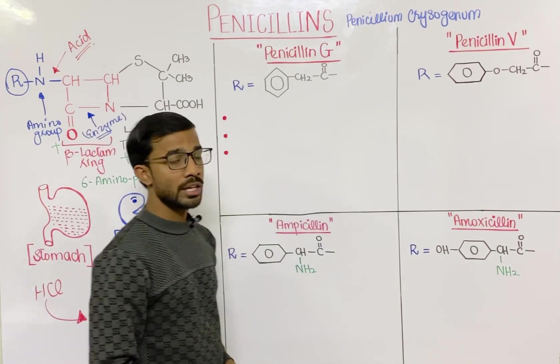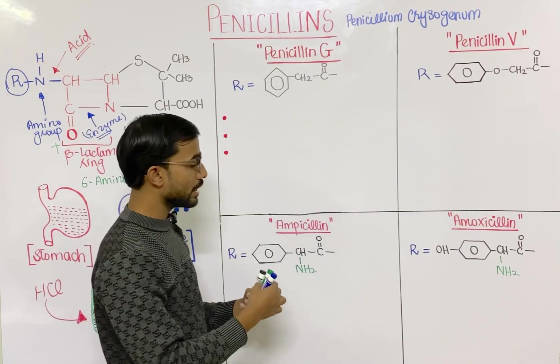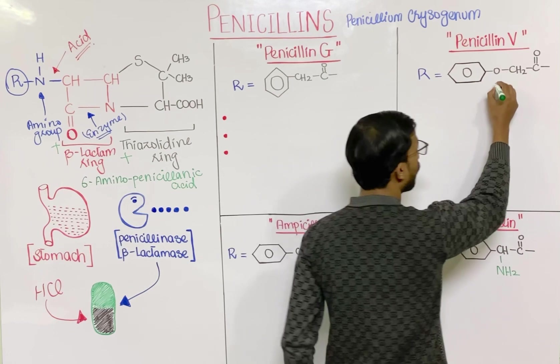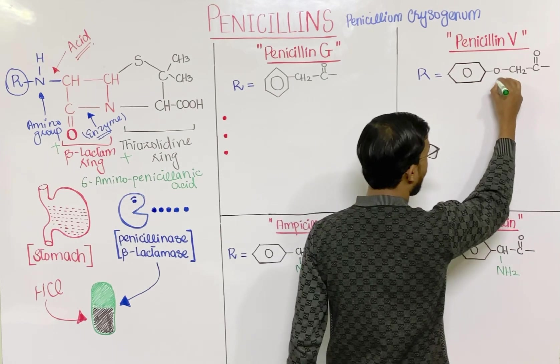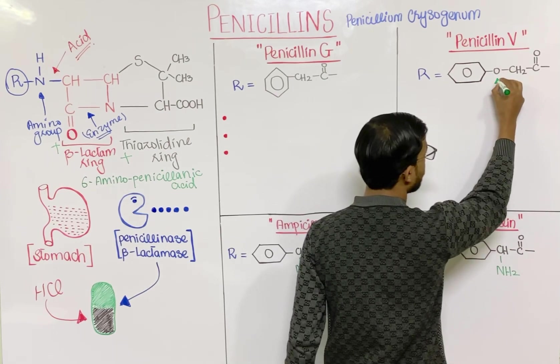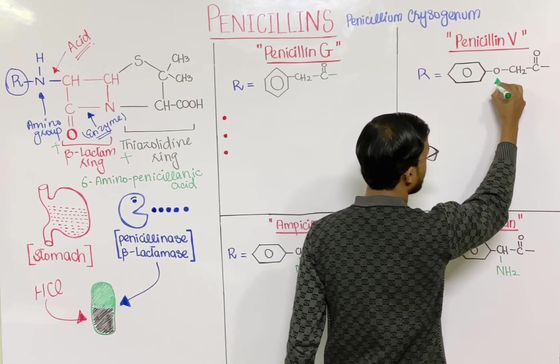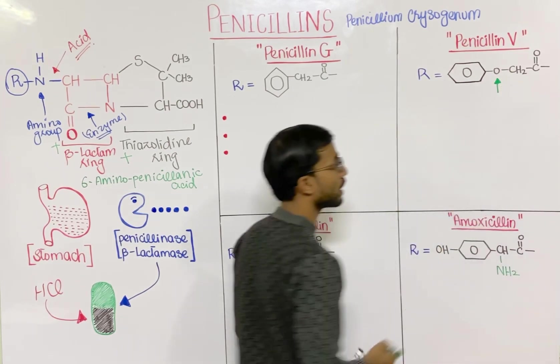In penicillin V, you will see just one addition of an oxygen atom compared to penicillin G — that is the most important difference.